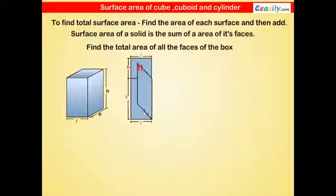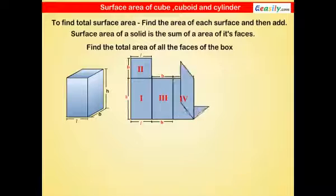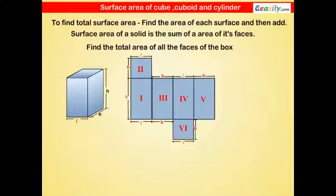We see that the cuboid has 6 total surfaces. The length is L, breadth is B, and height is H.